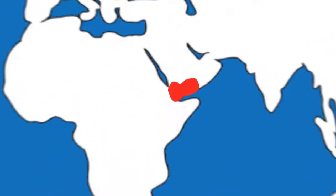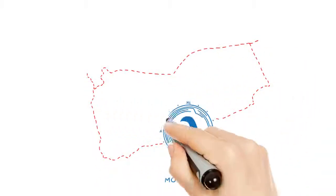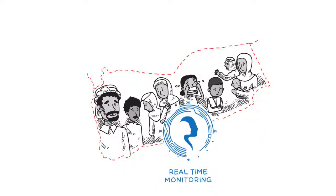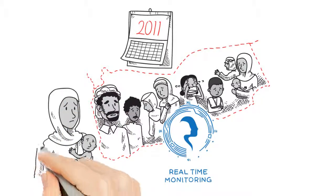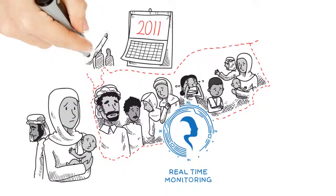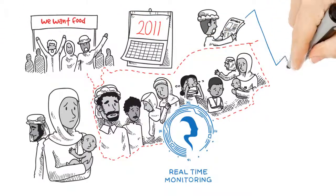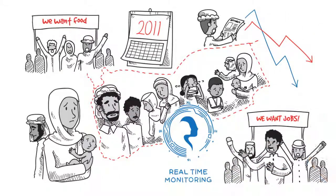The first stop is Yemen, where RTM is being used to track vulnerability build-up and respond to crisis situations. In 2011, the country was devastated by civil, political, and economic havoc. Despite the deteriorating conditions, there was no understanding of how vulnerable populations were coping with the multitude of shocks.